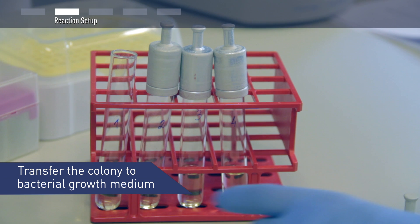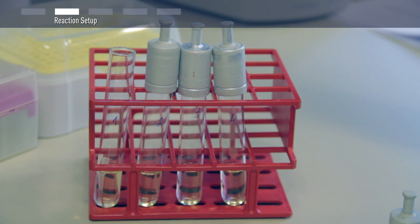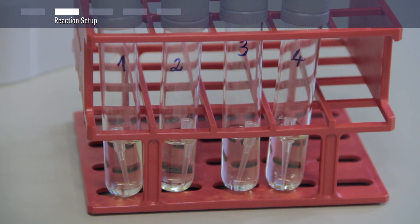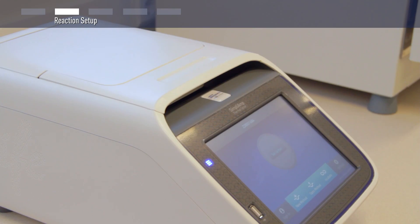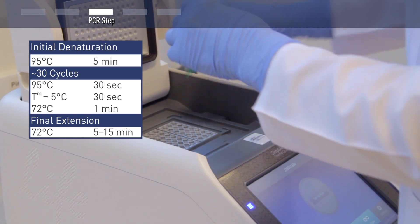Finally, transfer the tip into a labeled culture tube containing bacterial growth medium to grow bacterial cells for DNA purification. After you have picked all of the colonies, proceed with the PCR.